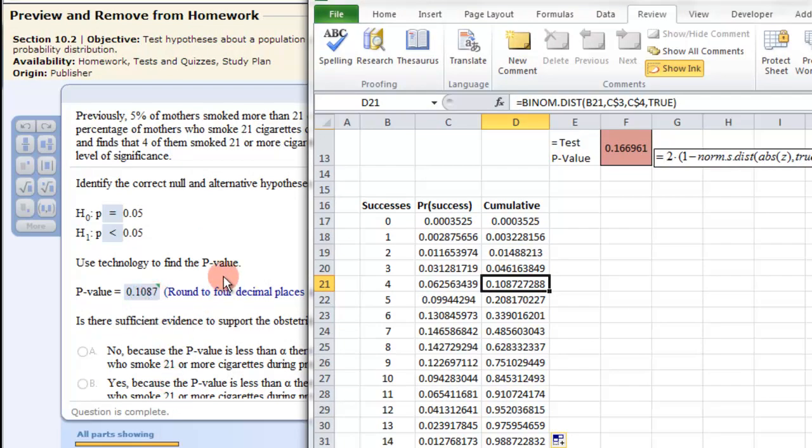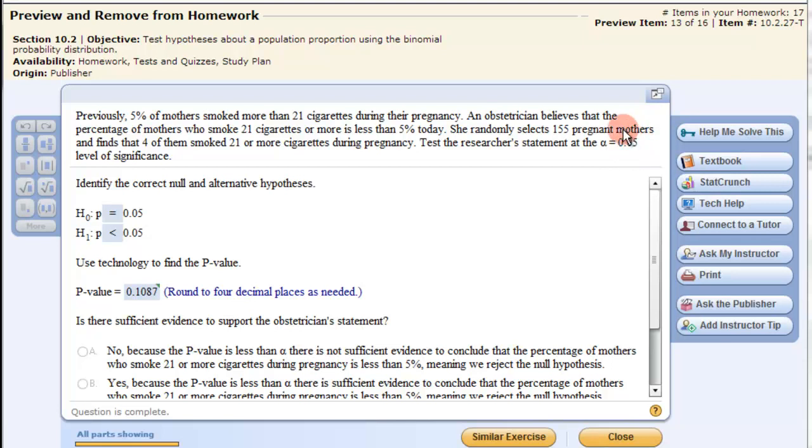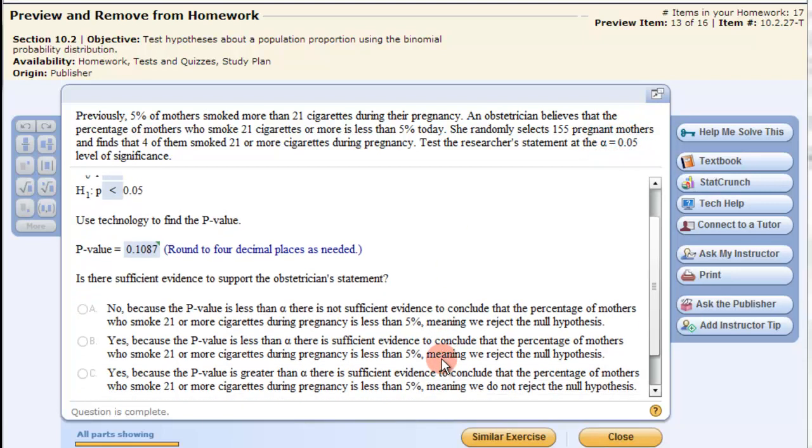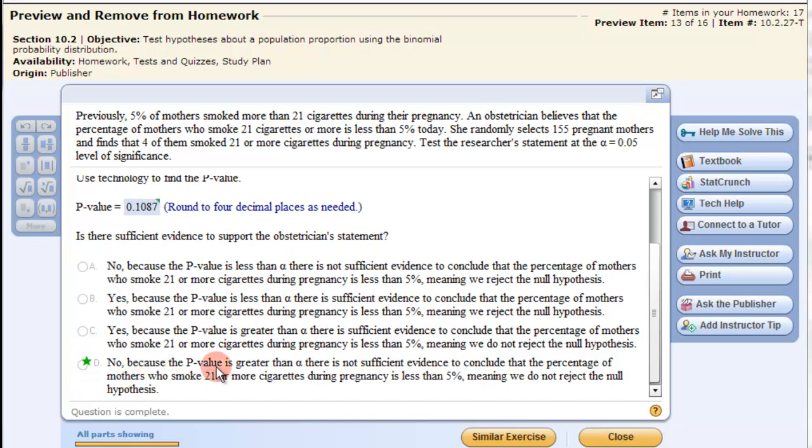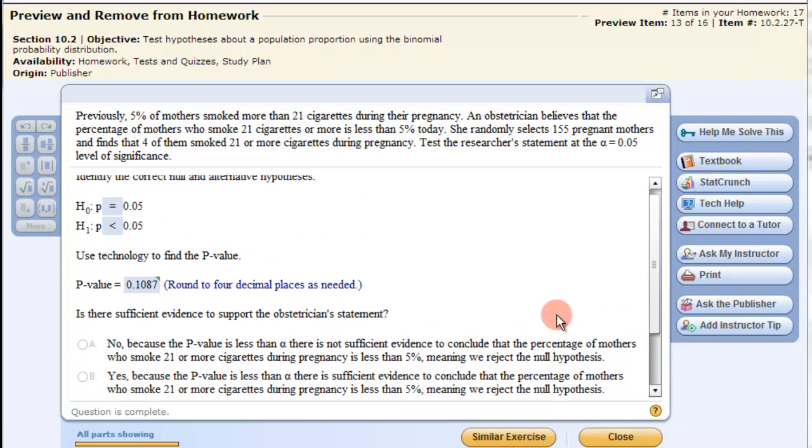Now, that p-value is greater than the level of significance. Therefore, when answering this question, is there sufficient evidence to support the obstetrician's statement? We say no, because the p-value is greater than alpha. There is not sufficient evidence to conclude that the percentage of mothers who smoke 21 or more cigarettes during pregnancy is less than 5%, meaning we do not reject the null hypothesis.